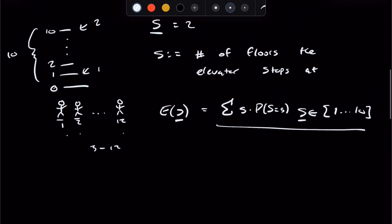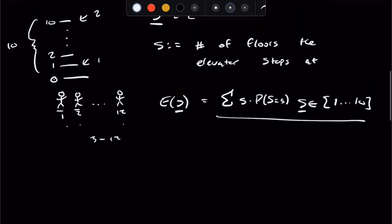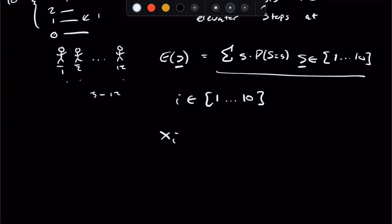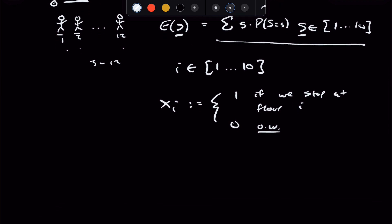So in this case, we're going to denote each floor, from i in 1 to 10, because there are 10 floors, and we'll call xi as the random variable, the indicator random variable, that's equal to 1 if we stop at floor i, and 0 if we do not stop at floor i (otherwise). So what we're doing is breaking down S into the sum of all of these indicator random variables, x1 plus x2 plus dot dot dot plus x10.